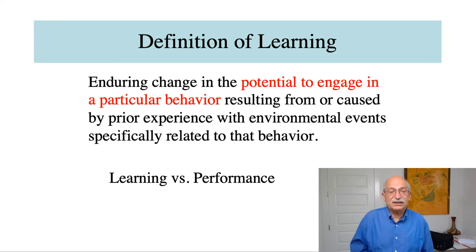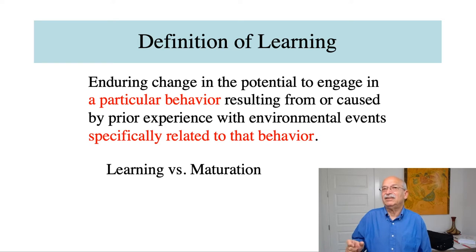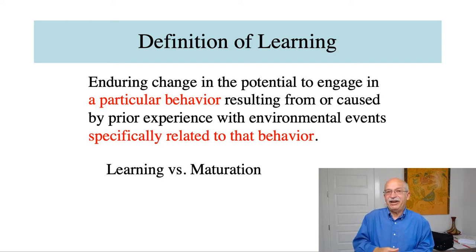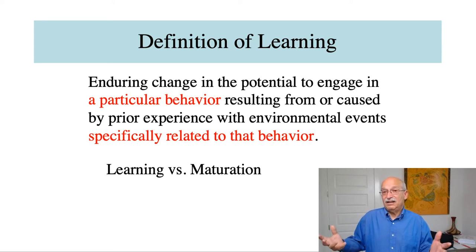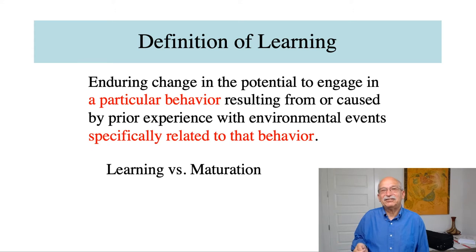The next component of the definition focuses on the fact that when talking about learning, you have to talk about learning a particular behavior — something specific. This is put into the definition to distinguish learning from maturational changes. Maturational changes affect all kinds of behaviors; as kids grow taller, for example, that's primarily due to maturation and nutrition. You don't learn to be taller — that's a maturational effect.